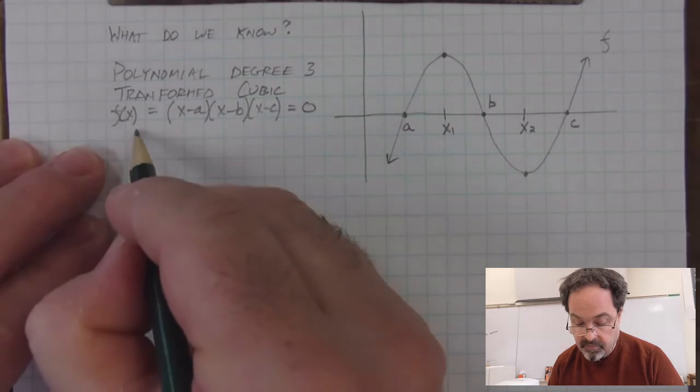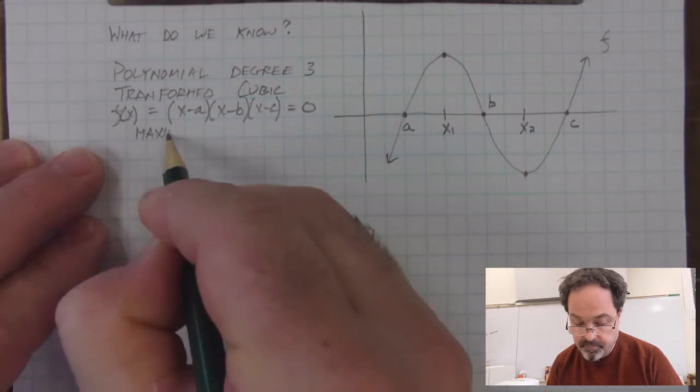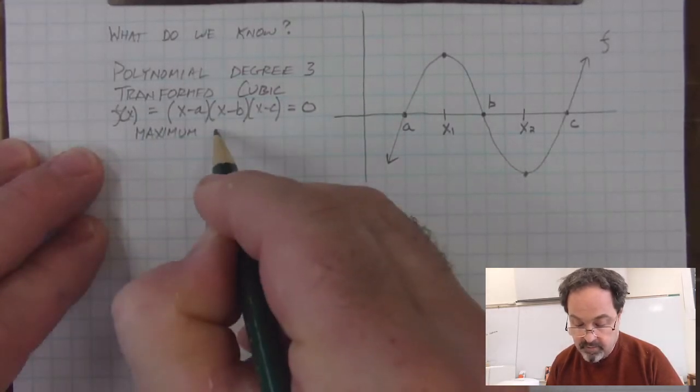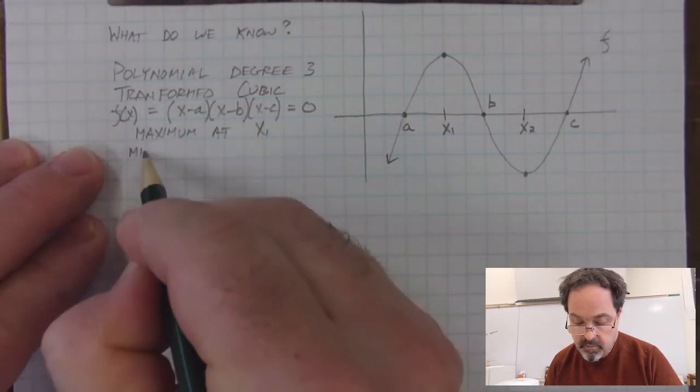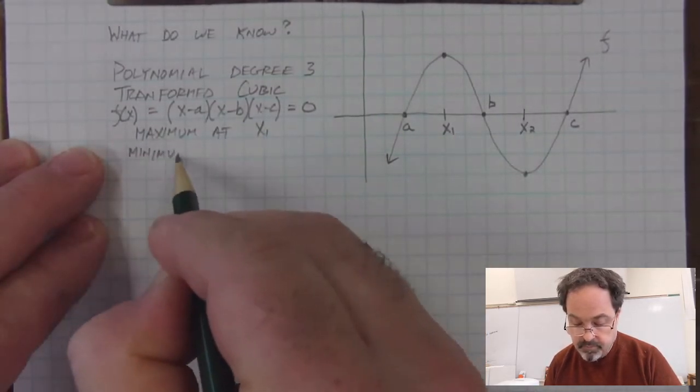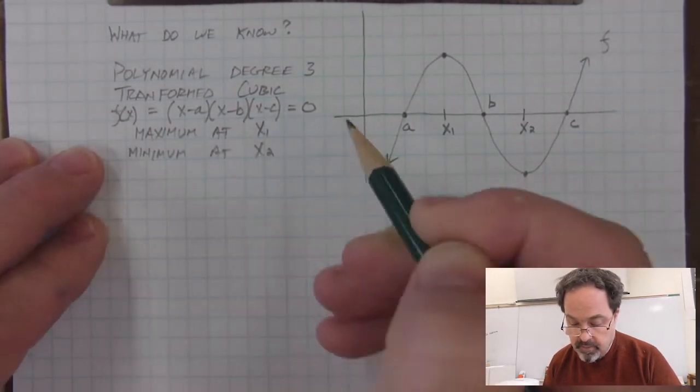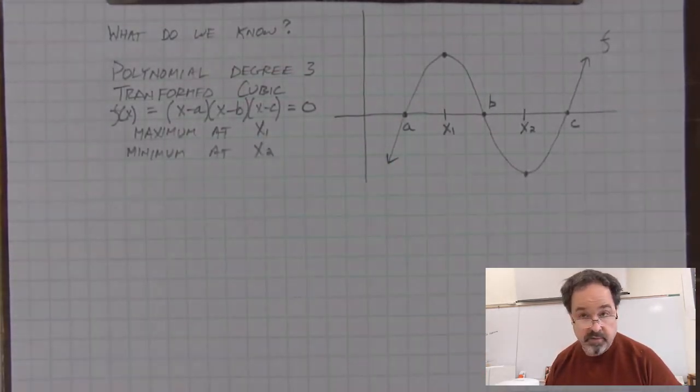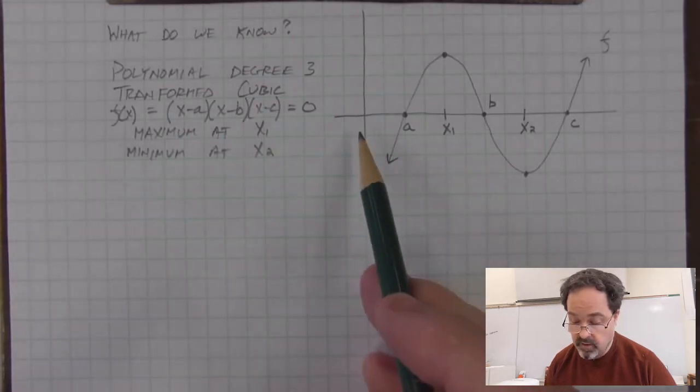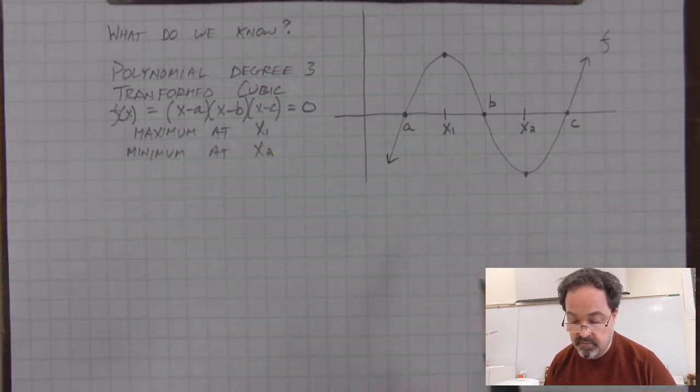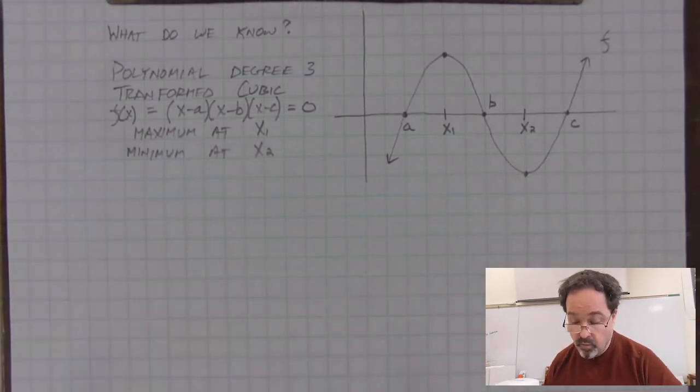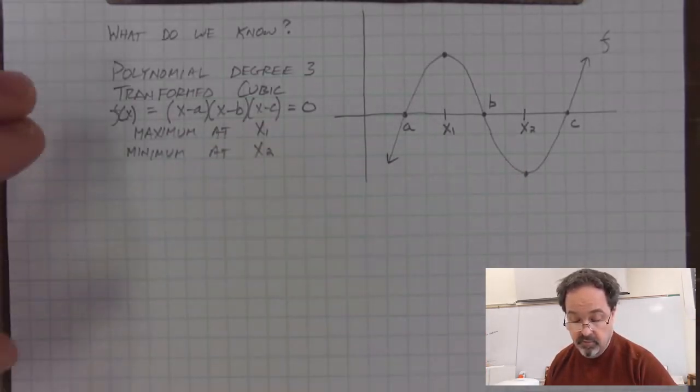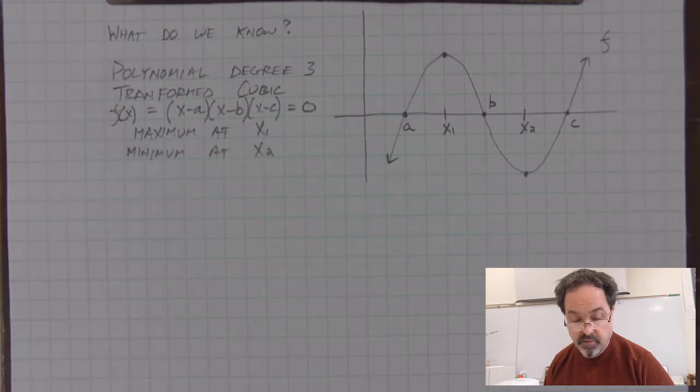And we could then say that there is a maximum at x sub 1, and a minimum at x sub 2. And obviously we're not giving values to these locations. We're generalizing these locations and listing the attributes in general terms.